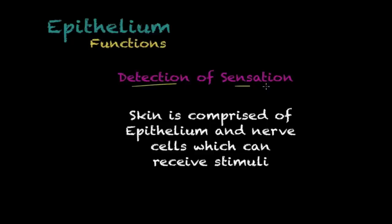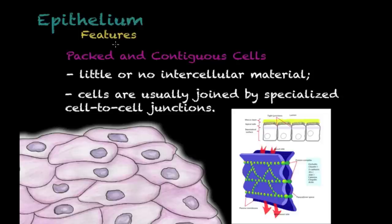The last function is detection of sensation. You might think this function would be mainly associated with nerve cells, but as I mentioned, epithelium is usually the first layer in contact with the outer environment. The skin is mainly comprised of epithelial cells, but also nerve cells, which receive stimuli from the outer environment. This is why epithelium is clearly involved in detection of sensation, along with nerve cells.